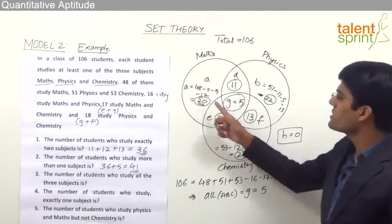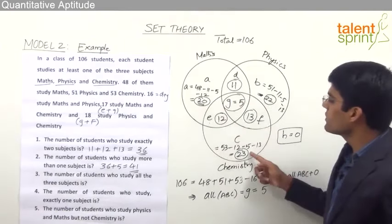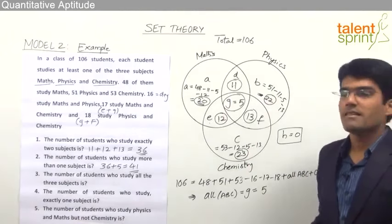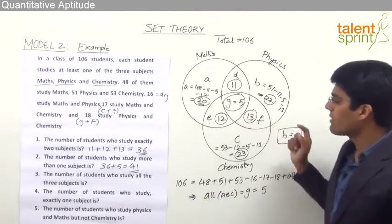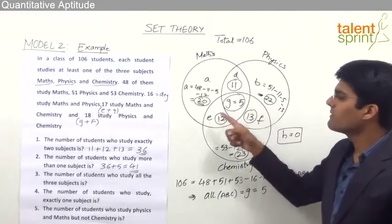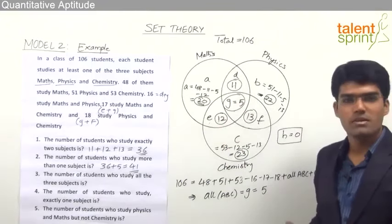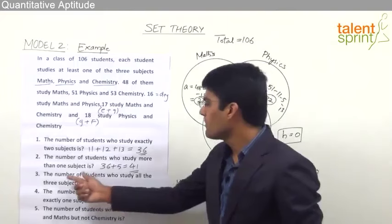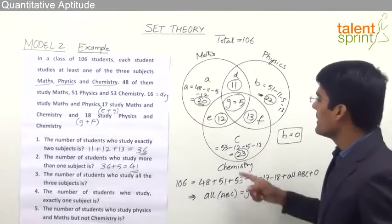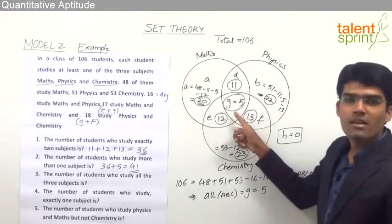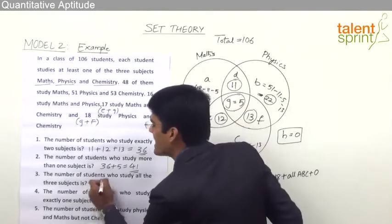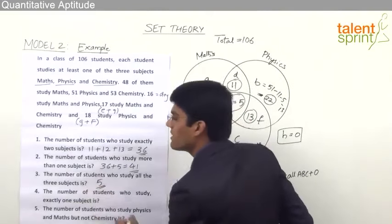The remaining students — 20, 22 and 23 — are those who study only one of the subjects: only Maths, only Physics, or only Chemistry respectively. Question 3: the number of students who study all 3 subjects. From the diagram, this is directly region G = 5. So 5 students study all three subjects.